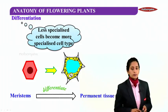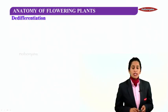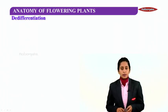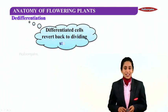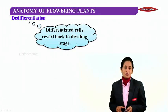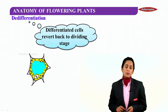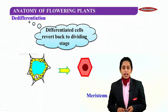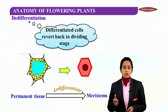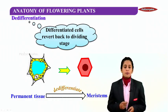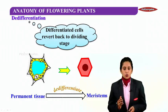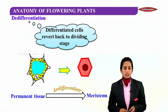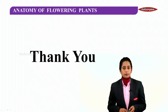The next term is de-differentiation, which is the reverse of differentiation. Here, differentiated cells revert back to the dividing stage. That means parenchyma, which is a permanent tissue, becomes meristematic in nature. Permanent tissues which are assigned with a function now start dividing again, and this often happens in large trees for the increase of girth.